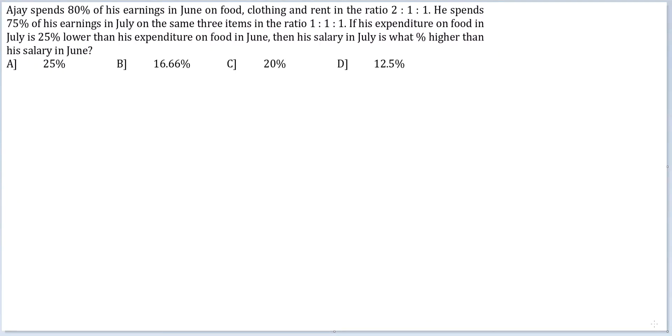Let's look at this question. Ajay spends 80% of his earnings in June on food, clothing and rent in the ratio 2 is to 1 is to 1. He spends 75% of his earnings in July on the same 3 items in the ratio 1 is to 1 is to 1. If his expenditure on food in July is 25% lower than his expenditure on food in June, then his salary in July is what percentage higher than his salary in June?